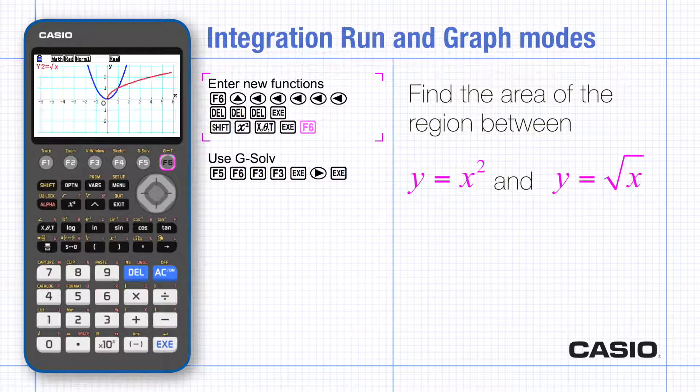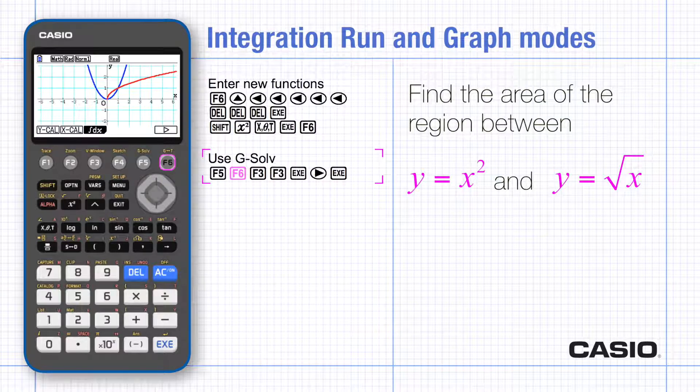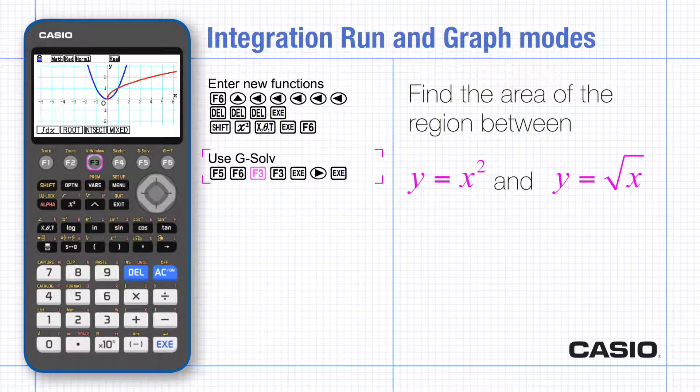If you go to g solve, second page, integral and intersection. The cursor appears at a point of intersection.